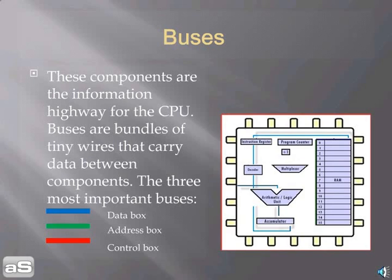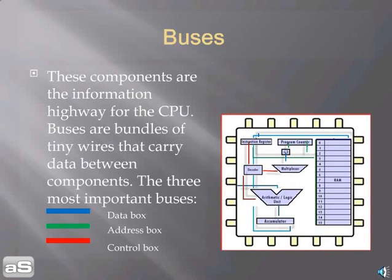Buses are the information highway for the CPU. They are bundles of tiny wires that carry data between components. The three most important buses are the Data Bus, Address Bus, and Control Bus.